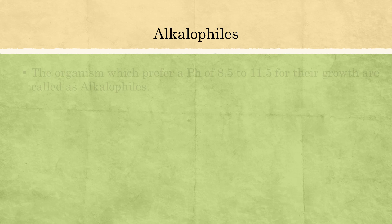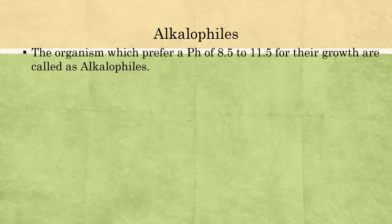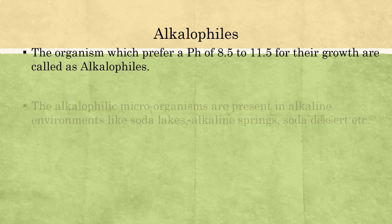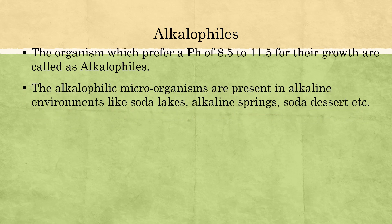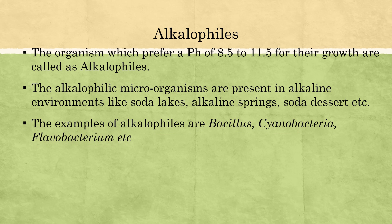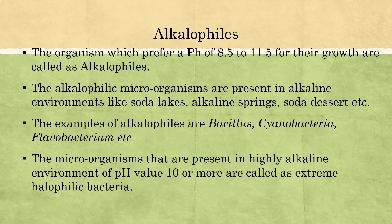Alkalophiles are organisms that prefer a pH of 8.5 to 11.5 for their growth. These alkalophilic microorganisms are present in alkaline environments like soda lakes, alkaline springs, and soda deserts. Examples include Bacillus, Cyanobacter, and Flavobacterium. Microorganisms that are present in highly alkaline environments of pH 10 or more are called extreme alkalophilic bacteria.